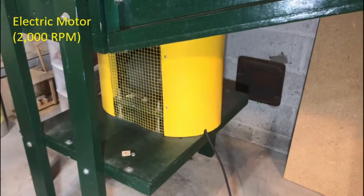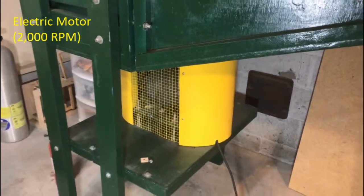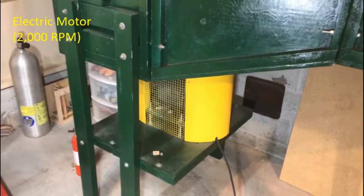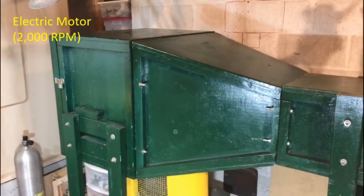This view shows the housing of the electric motor that spins the propeller. The motor is connected to the propeller by a belt. The motor generates approximately 2,000 revolutions per minute and runs off 120 volts AC.